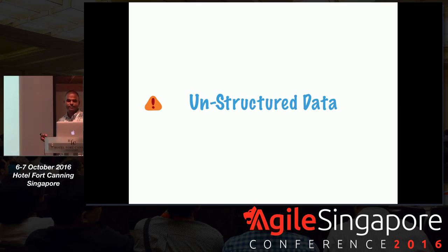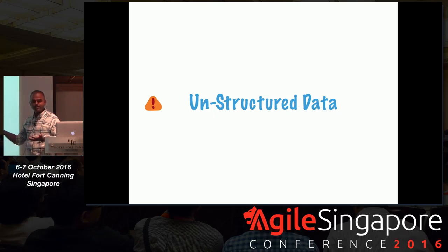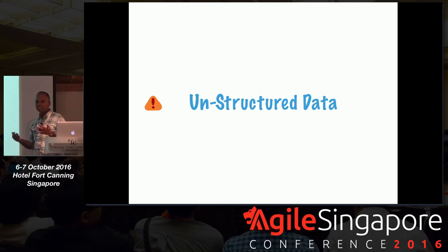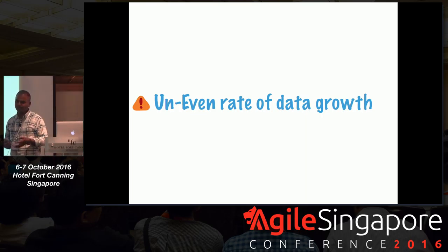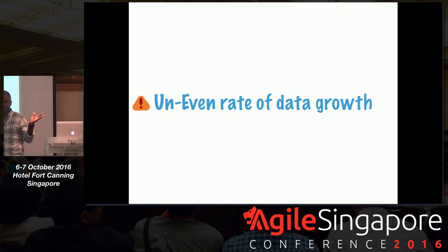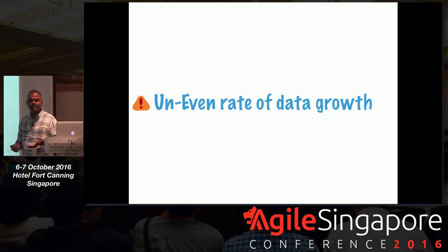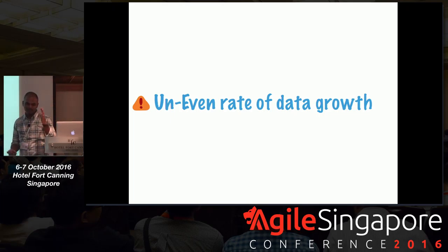There's also unstructured data — with IoT picking up, you get streams from everywhere. By the time you model the data, the type of stream coming in has already changed. You just want to store whatever is coming in at whatever shape and rate it's coming in. There's also the uneven rate of growth — a startup might expect a million users in a month, buy a big machine, then have two users. Or the other way: three million users and your machine's already short. Horizontal scaling helps — as users get added, you just keep adding nodes to your cluster.